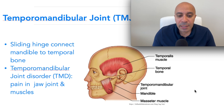You can see the temporomandibular joint here — the mandible is here and the temporal bone is here. When you have a jaw issue, the technical term for it is temporomandibular joint dysfunction, or TMD. This is another good image of it, showing the problematic area.